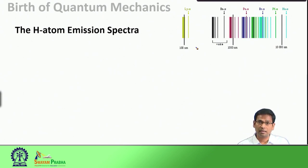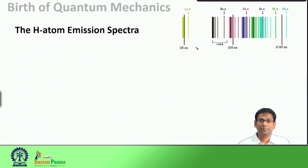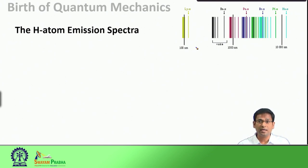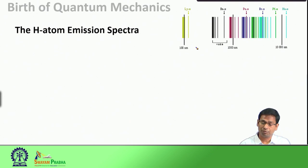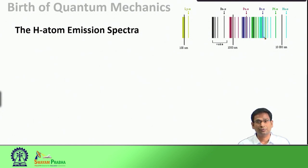The emission spectra ranges between UV, visible, and infrared range. We know from previous classes that the emission spectra of the hydrogen atom could be at least numerically explained by different spectroscopists - Lyman, Balmer, Paschen, Brackett and so on. So these series of lines are called the Lyman series, Balmer series, Paschen, Brackett and so forth.